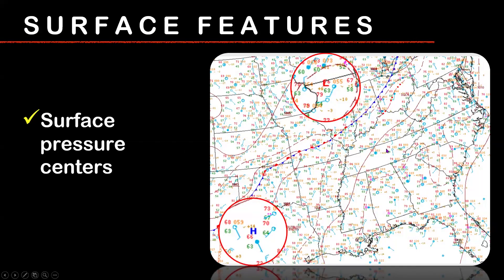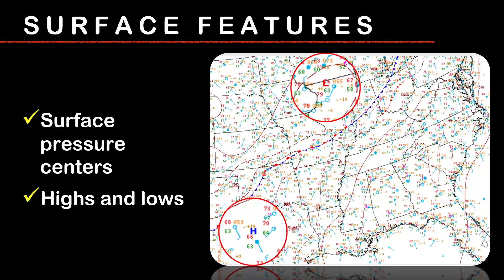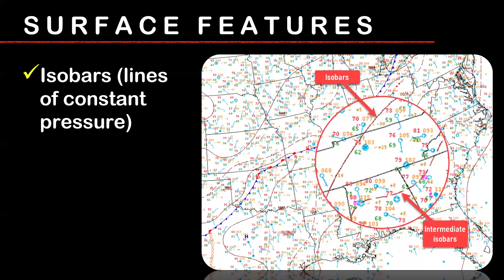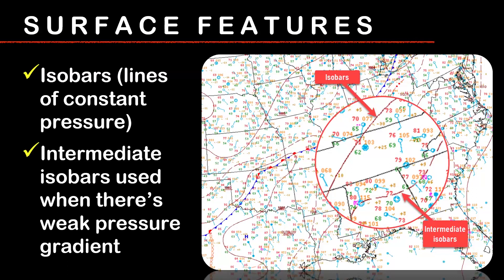You also see surface pressure centers — whether it's a high pressure or low pressure — depicted on the chart. That's the highest or lowest pressure in the area. You'll see lines of constant pressure, or isobars. To really confuse you on some of these charts, they will actually put intermediate isobars that are dashed. Basically, isobars are presented every four millibars, but when there's a weak pressure gradient, forecasters will often pen in an intermediate isobar every two millibars.